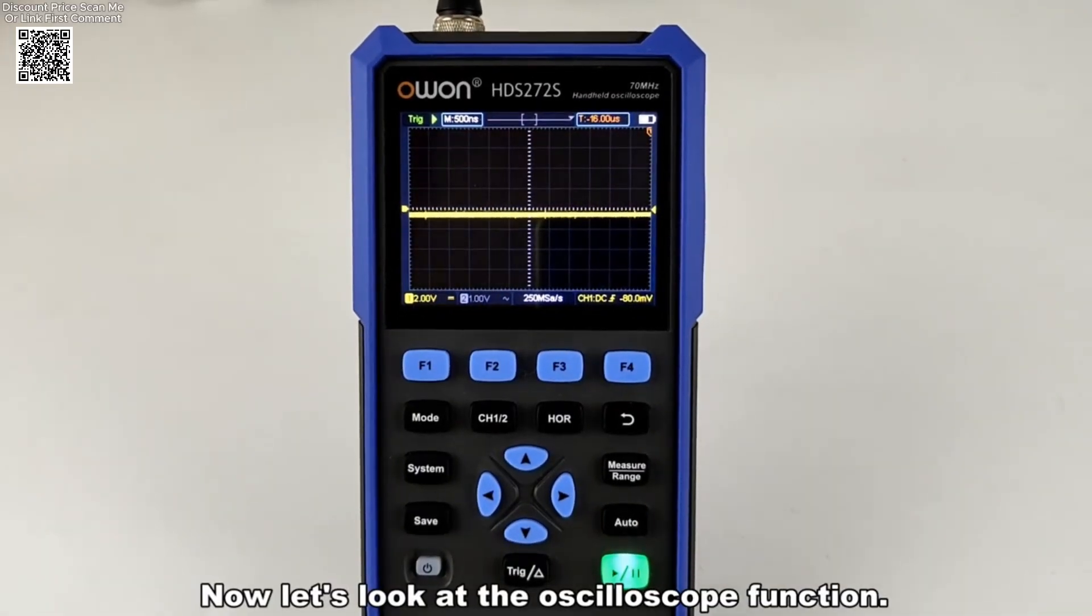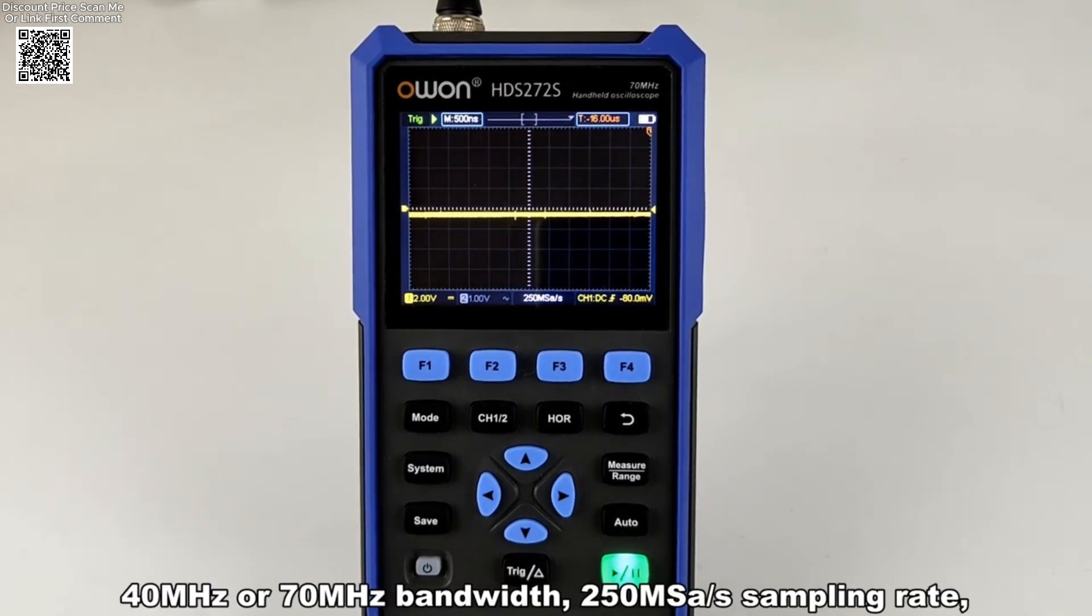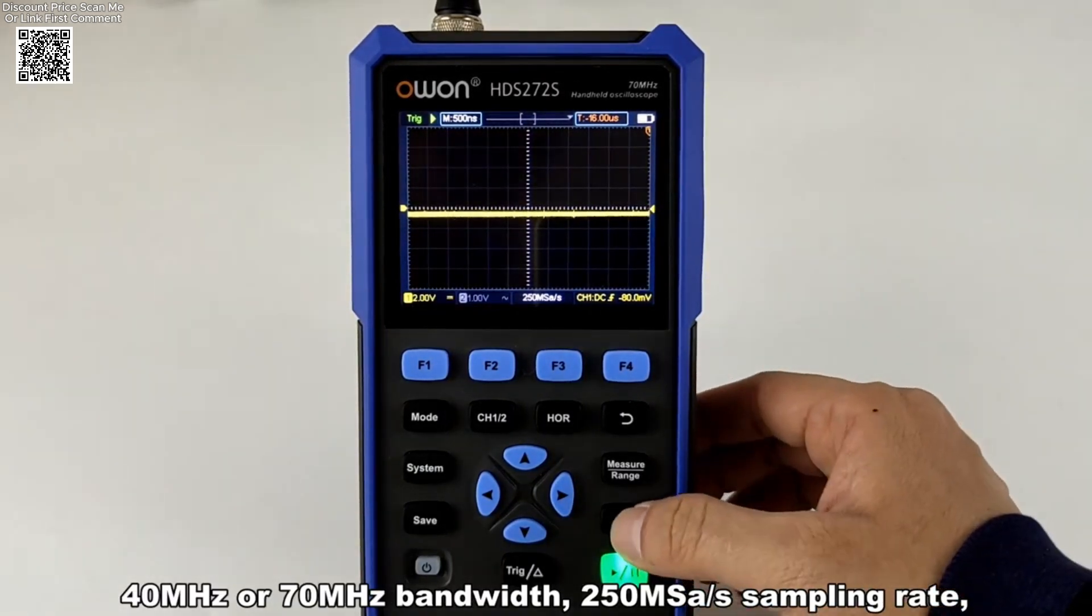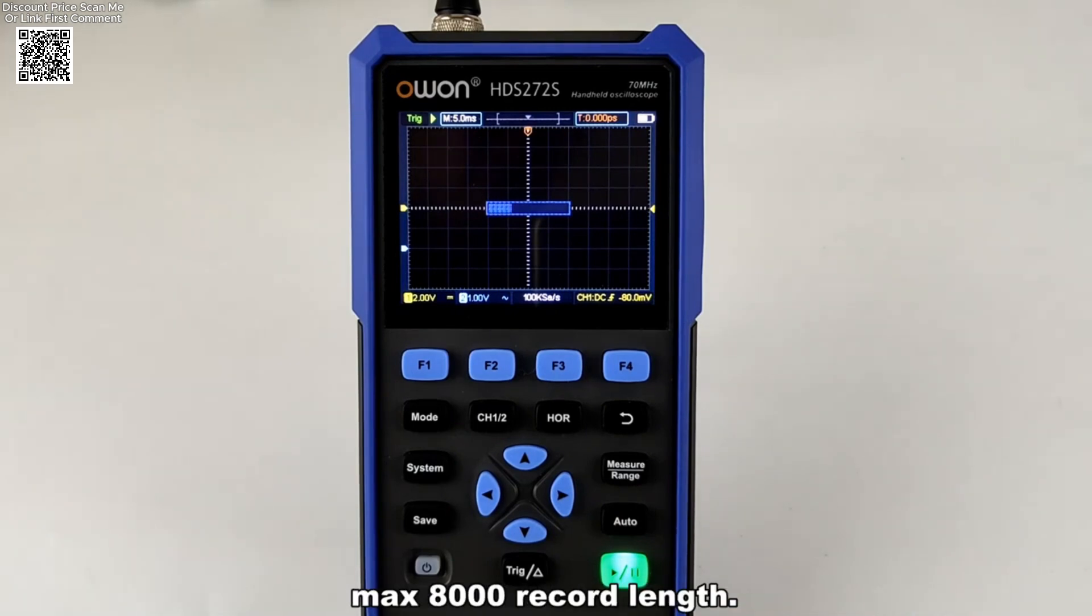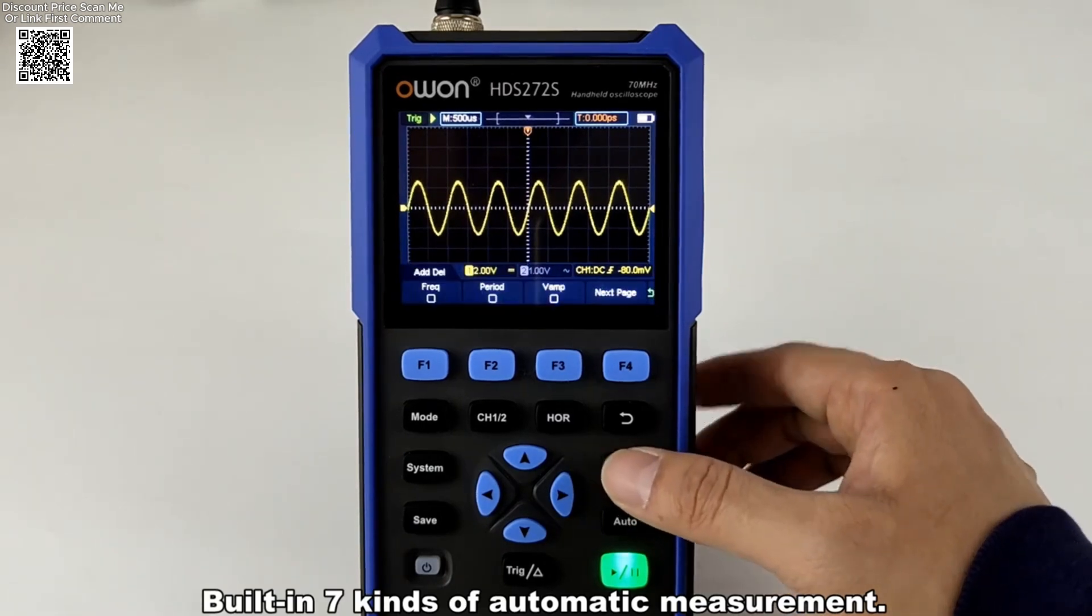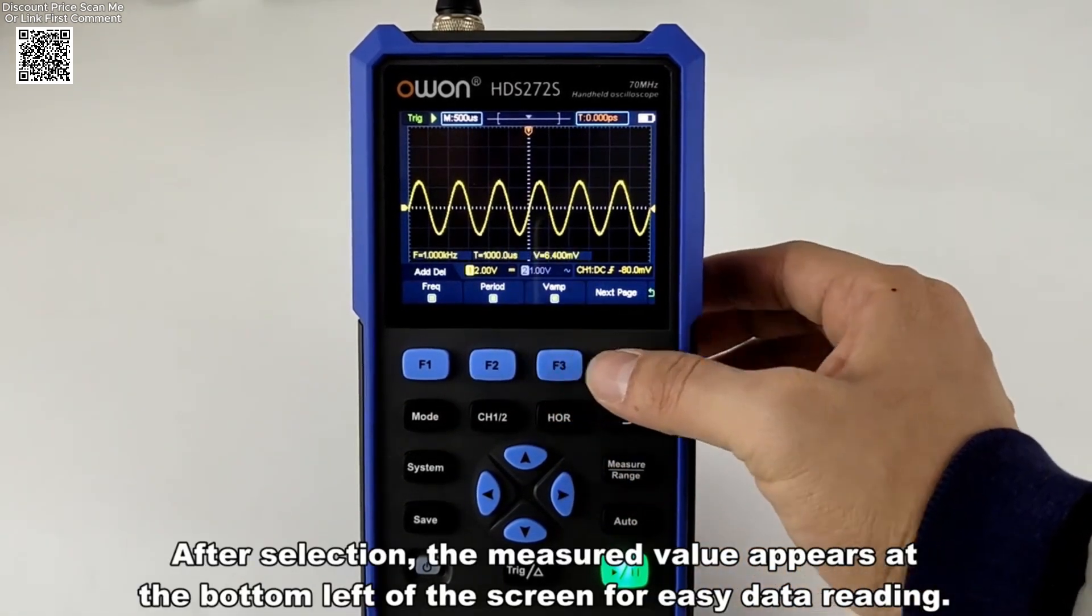The OWON HDS-2202S from the HDS-200 series is a true all-in-one handheld digital oscilloscope that brings together three essential tools in one compact device: an oscilloscope, a multimeter, and a waveform generator. With a bandwidth of 200 megahertz and a real-time sampling rate of 1 GS/s, it delivers reliable and highly detailed signal analysis.